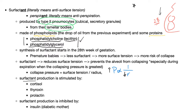Surfactant production is stimulated by cortisol, thyroxin, and prolactin — another exam question. They will ask which hormones stimulate surfactant production, and some students only know cortisol. So they might not include cortisol as a choice — they might include thyroxin or prolactin instead. Thyroxin or prolactin will then be the correct answer.